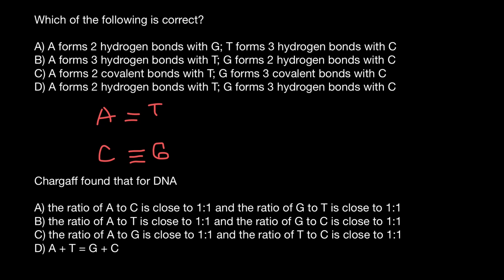So now we can choose the correct answer, and this is answer D: adenine forms two hydrogen bonds with thymine, and guanine forms three hydrogen bonds with cytosine.